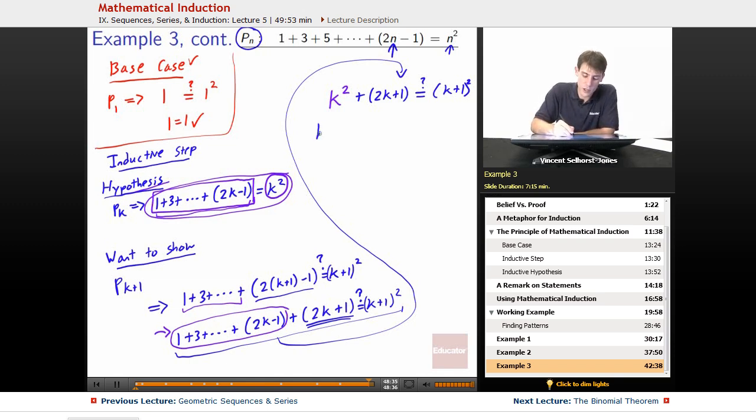So (k+1) squared, well, let's just simplify it. We've got k squared, we expand this, well, k squared plus quantity 2k plus 1, that's just 2k plus 1. Is that equal to what we get when we expand (k+1) squared? Well, that's k squared plus 2k plus 1. Hey! We wind up seeing that is indeed true, that is always going to wind up being true, so we have shown our inductive step is true.